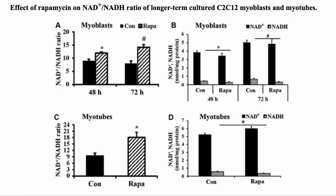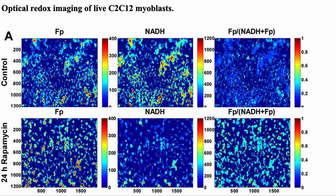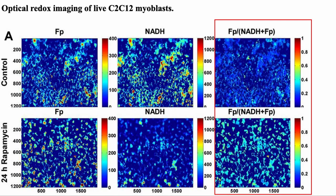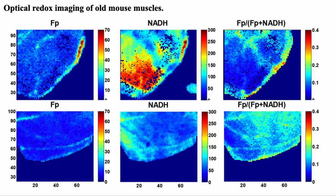However, when rapamycin was applied, we can see that the NAD plus to NADH ratio was higher. The top row shows for the myoblasts the original state of the cells, and the bottom row after they have differentiated into myotubes, which is a kind of muscle cell. In each case we can see that the NAD to NADH ratio is improved by rapamycin. Here we see images using a technique called optical redox imaging, which measures the fluorescent intensities of NADH and FP — oxidized flavoproteins — directly matching the NAD plus to NADH ratio. We can see that NADH is lower with rapamycin, and as NADH is lower, the FP to FP and NADH ratio increases. Here are similar images using ex vivo mouse muscle cells from aged mice, where again we can see the improved NAD to NADH ratio in the second column.